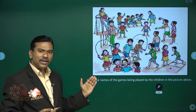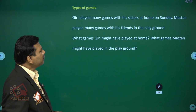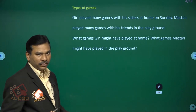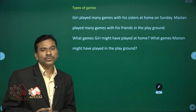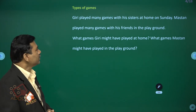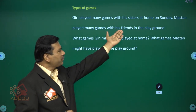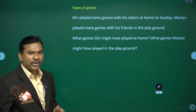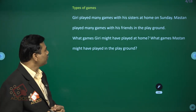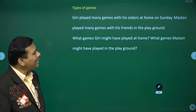Giri played many games with his sisters at home on Sunday. During holidays and festivals, children play different kinds of games with brothers, sisters and neighbours. Mustan played many games with his friends in the playground, because alone we are unable to play — with friends we are able to play different kinds of games. So what games might Giri have played at home?